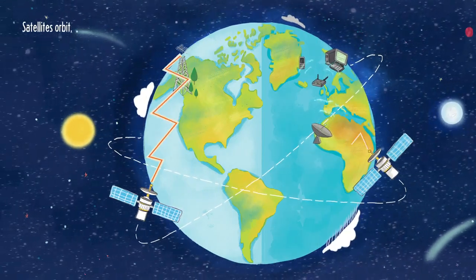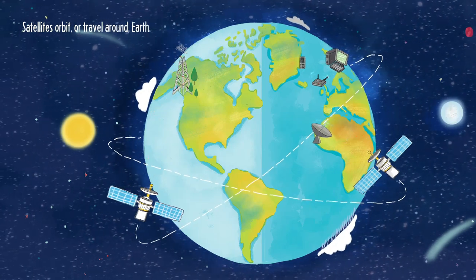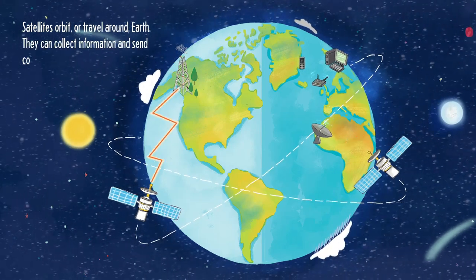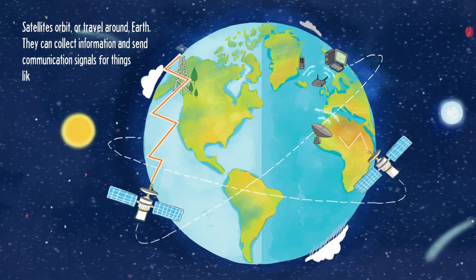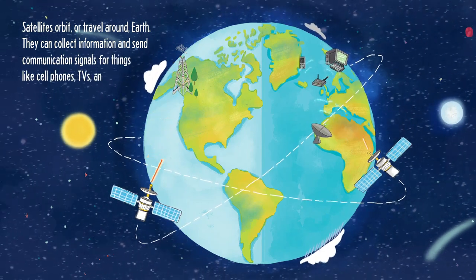Satellites orbit or travel around Earth. They can collect information and send communication signals for things like cell phones, TVs and computers.